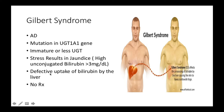With Gilbert syndrome, there's actually a defective uptake of bilirubin by the liver, and therefore patients are going to present with yellowing of the skin. There's actually no specific treatment prescribed for patients with Gilbert syndrome.